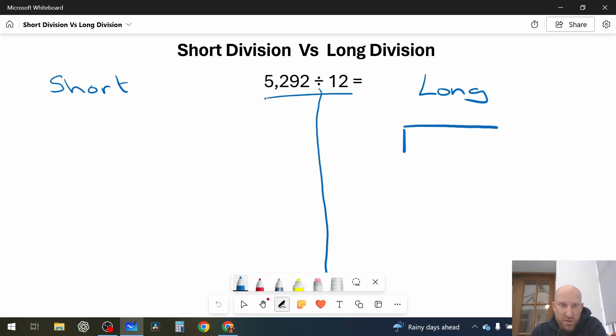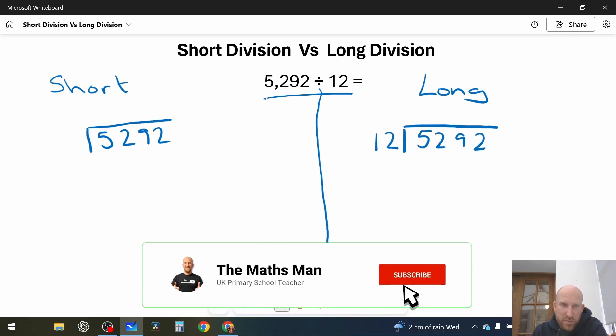So the first thing that is the same is that right at the very beginning they both look exactly the same. So they both use the bus stop. And we're going to write the number that we are dividing underneath, so 5292. We're going to write the number that we are dividing by on the outside of the bus stop, like that.